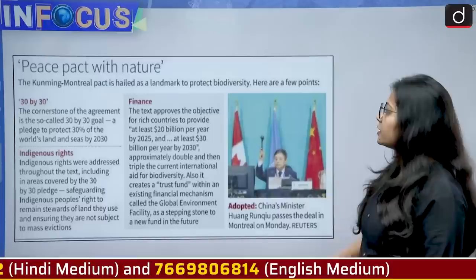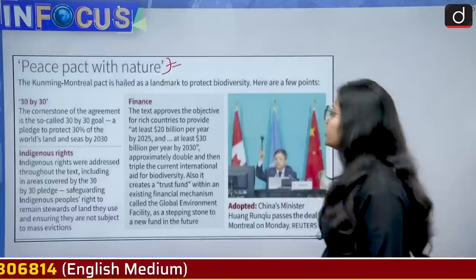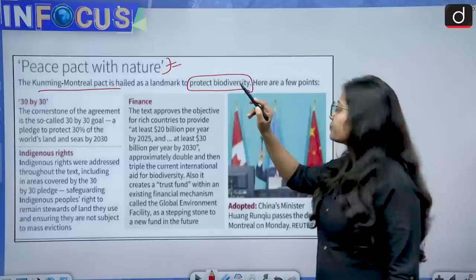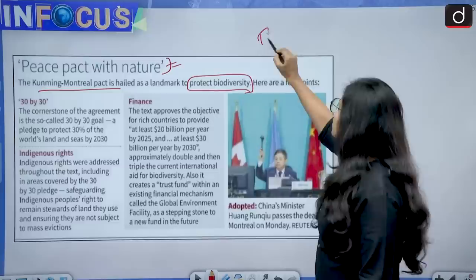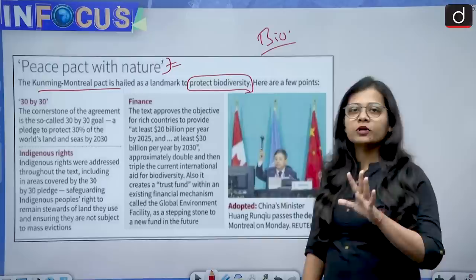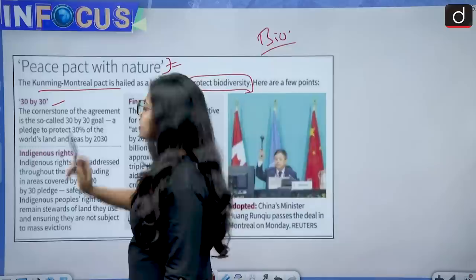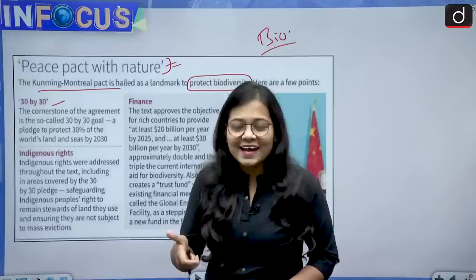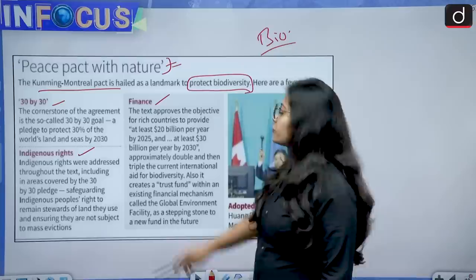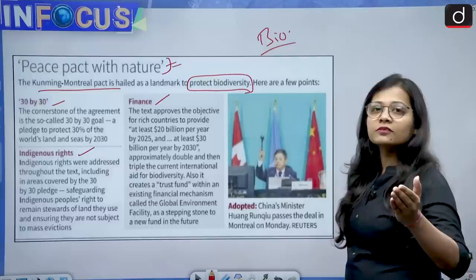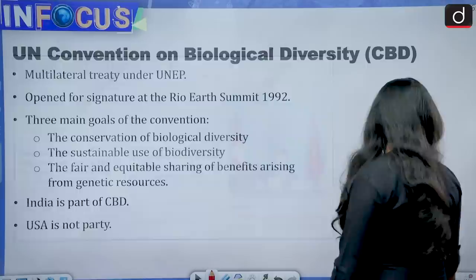From newspaper coverage, the Kunming-Montreal Pact is hailed as a landmark to protect biodiversity. Whenever a question comes about this pact, remember one word: biodiversity. Key points to remember: the 30 by 30 target means 30 percent protection of land and seas by 2030; indigenous rights were recognized; and the total finance commitment was 200 billion per year, with developed countries helping developing ones.